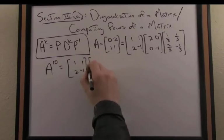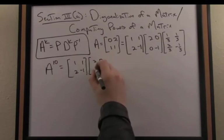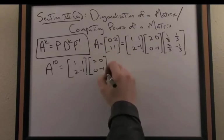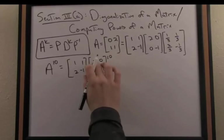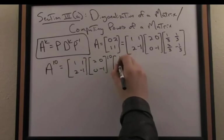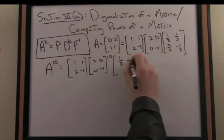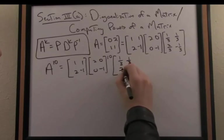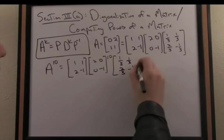Then I take that diagonal matrix, raise it to the 10th power, which entails just raising each component to the 10th power, so it's very efficient indeed. And then I lastly just multiply by the inverse of our original eigenvector matrix.